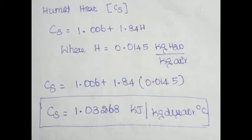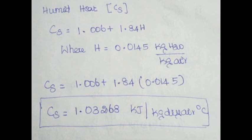Next, humid heat (CS). The formula for humid heat is: CS = 1.006 + 1.84H, where H is the absolute humidity taken from the graph. H = 0.0145 kg of water per kg of air. Substituting, CS = 1.03268 kJ per kg of dry air per degree Celsius.